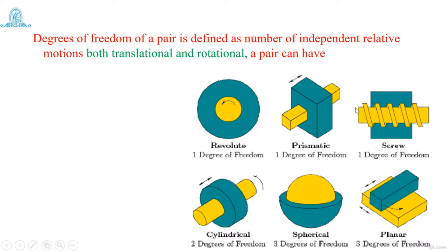In this case, if you give only sliding motion, the screw is not going to slide. When you give a rotational or turning motion, then it both turns and simultaneously slides. That is why only one degree of freedom applies for the screw pair — the sliding motion is dependent on the turning motion and is therefore not counted separately.